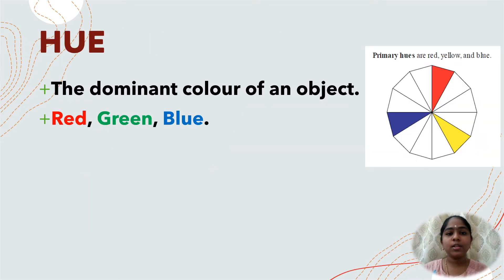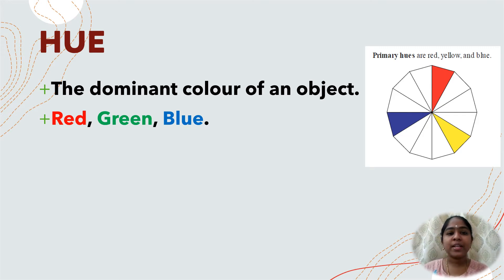Hue refers to the dominant color of an object — that is the primary colors, namely red, green, or blue. This refers to the dominant wavelengths present in the spectral distribution.